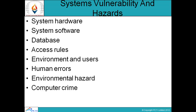Environmental hazards include earthquakes, storms, power outage, fire, and defective air conditioning. Fire and power outage are the most common environmental hazards for information systems. Computer crime: any crime in which a computer or information system is used as a tool is called computer crime or cyber crime.